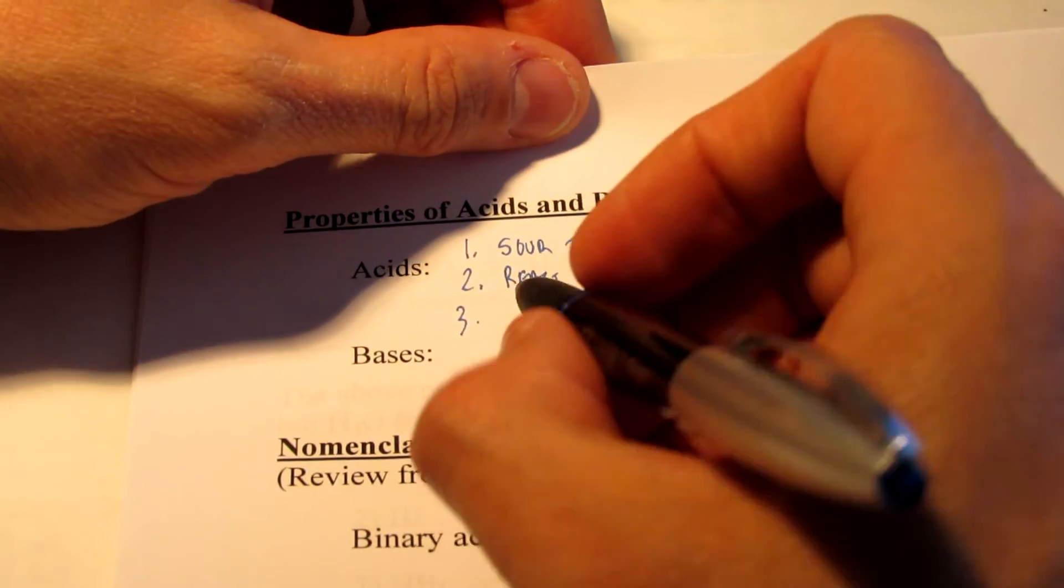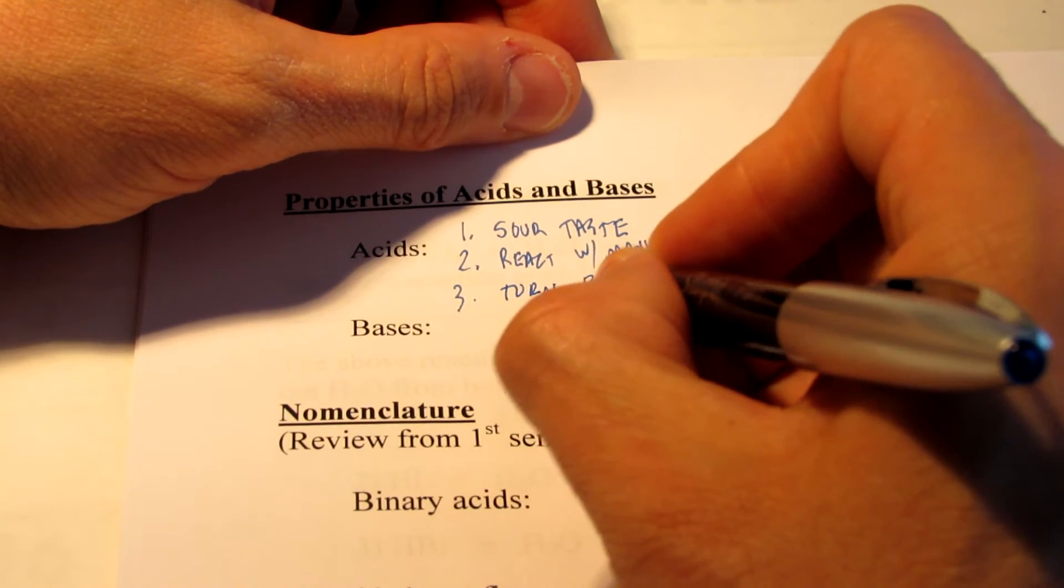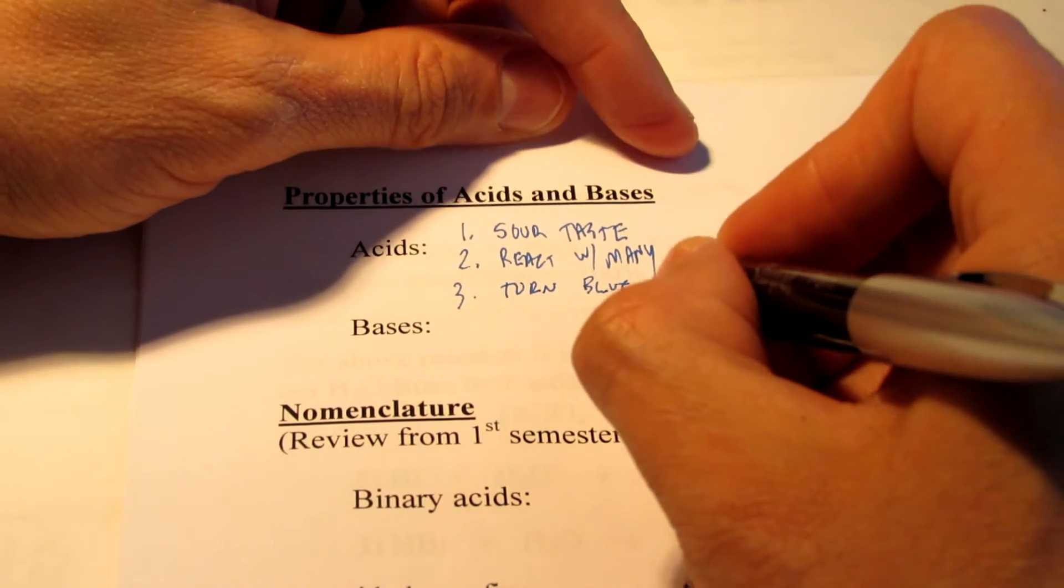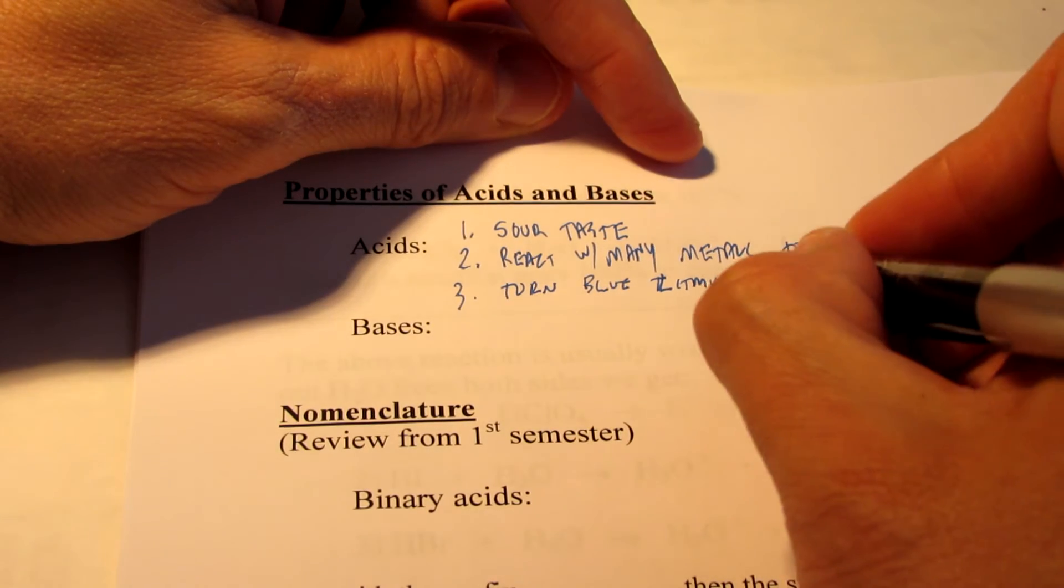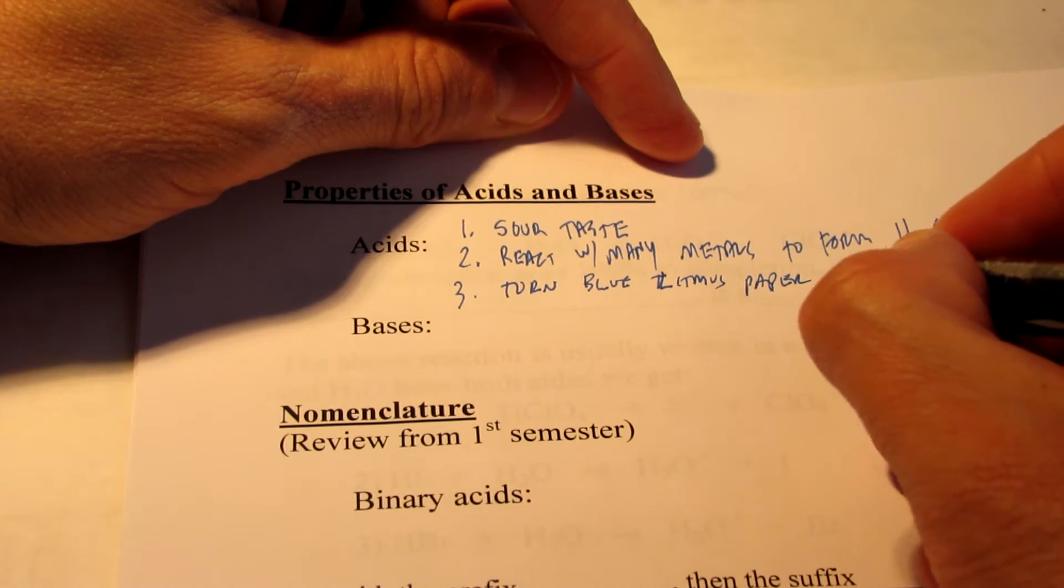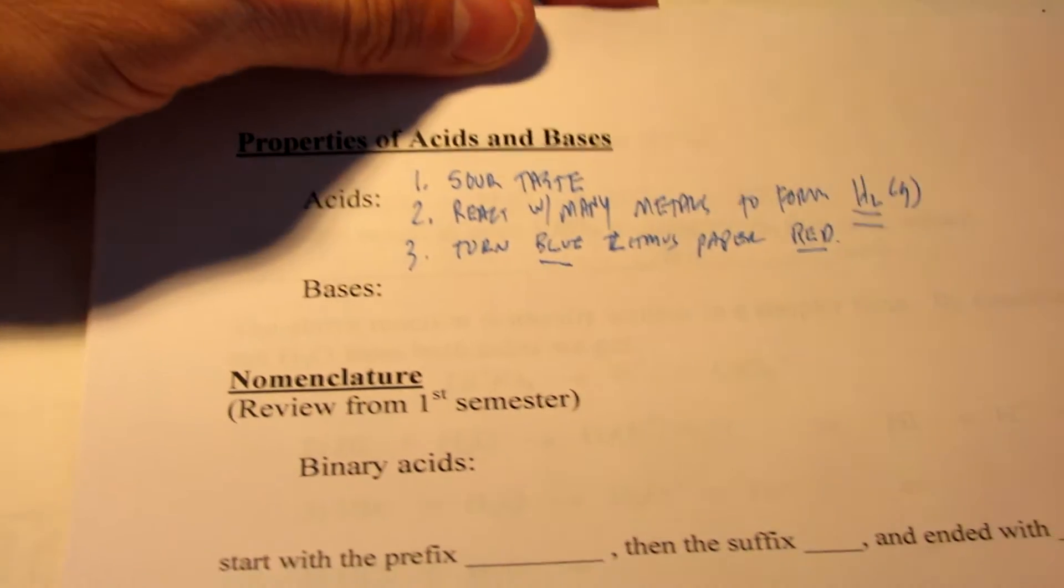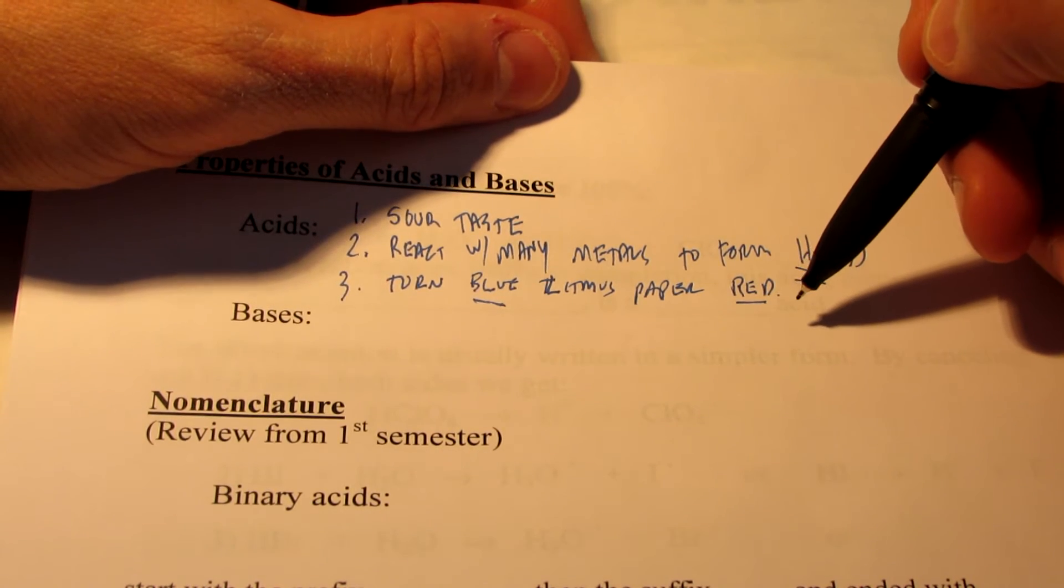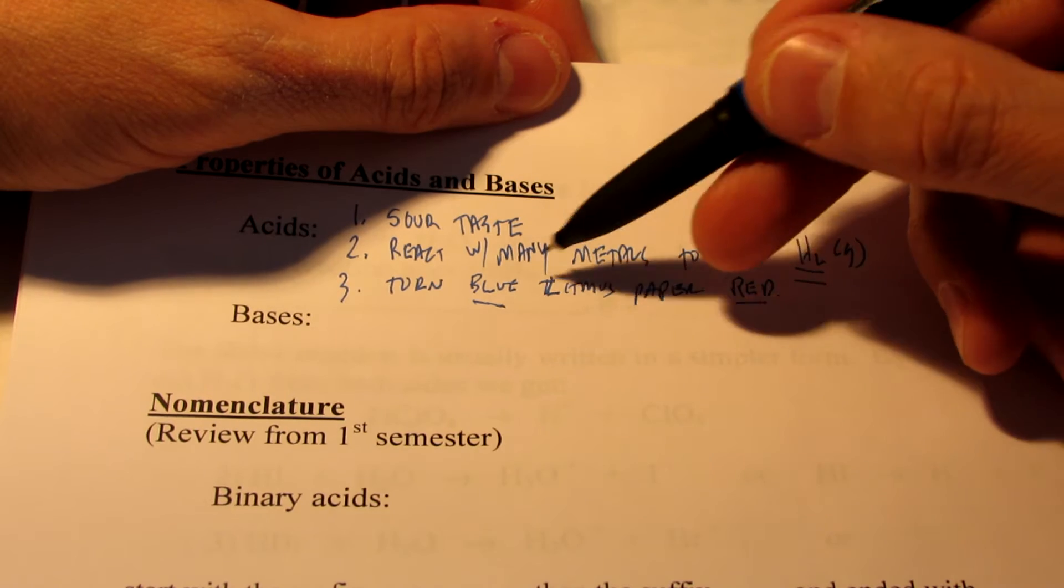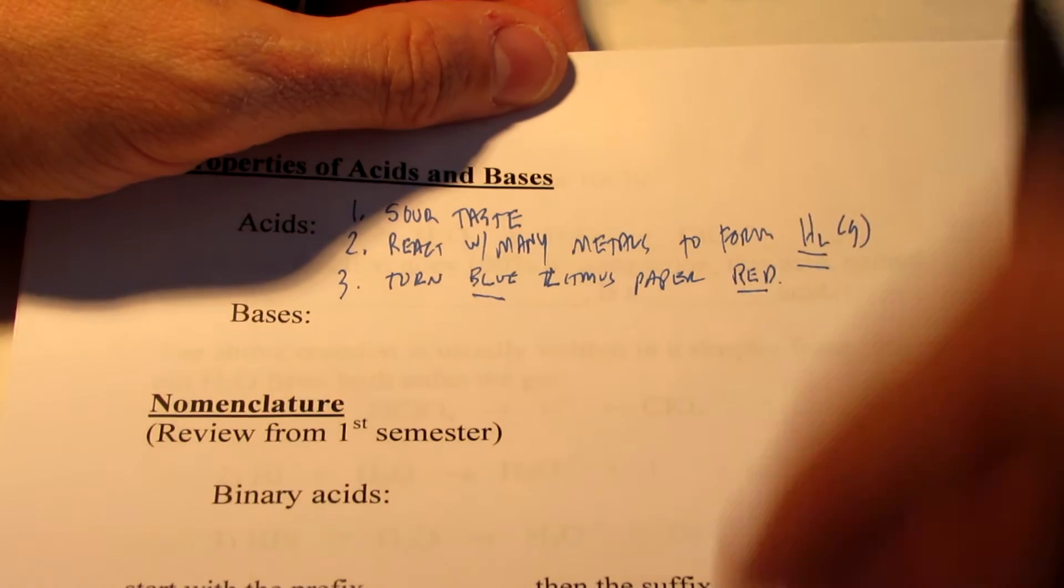And number three, this is what we'll see in class. Acids turn blue litmus paper red. That's called an indicator. Blue litmus turns red in the presence of an acid. So we can tell quickly if something's acidic or basic by doing something called a litmus test. If blue litmus paper turns red, we know we have an acid on our hands.